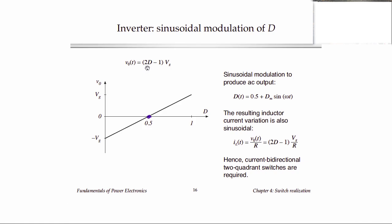And if you increase the duty cycle above one-half, we get positive voltage. And when we decrease the duty cycle below one-half, we get negative voltage, and the overall conversion ratio function looks like this.